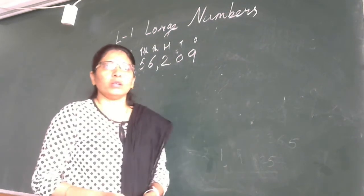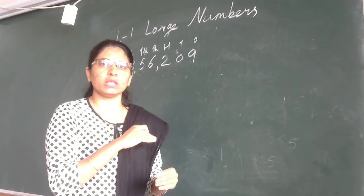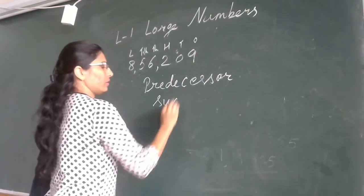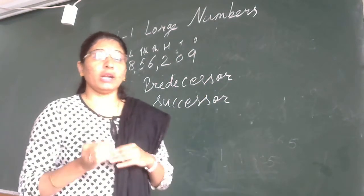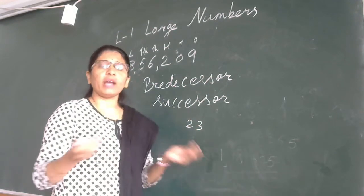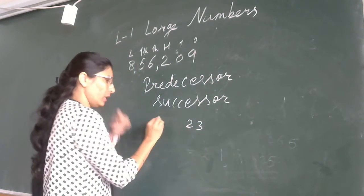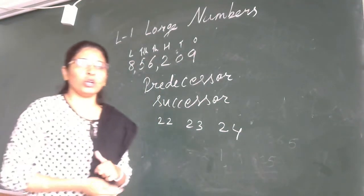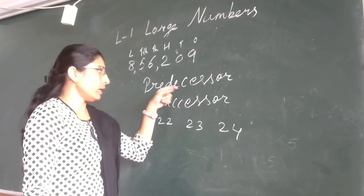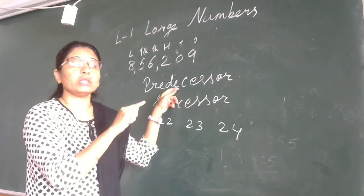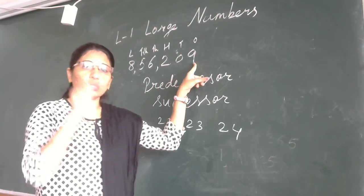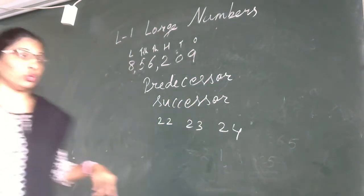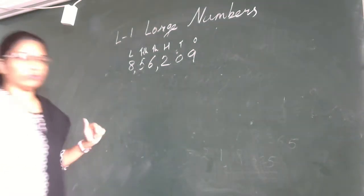Now we have predecessor and successor. Predecessor means the number before, successor means the number after. For smaller numbers like twenty-three, the predecessor is twenty-two and the successor is twenty-four. For large numbers, to find the predecessor we subtract one from the ones place only. To find the successor we add one to the ones place only.